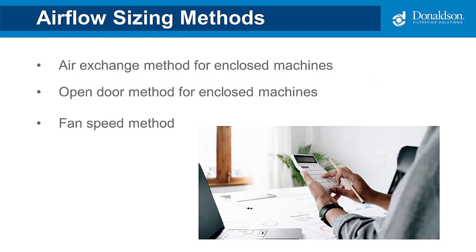A lot of times you'll be buying a new milling machine or CNC and it already comes with a mist collector mounted to the system, and when you fire it up you realize the mist collector supplied is not adequate for your application. This is usually because the machine manufacturer may have undersized the application or selected the wrong technology. This is common with OEMs whose expertise is in selling that CNC or mill, not necessarily the mist collection system — even though it's a vital component. So there are several methods we use for sizing mist collection systems, and we're going to talk about three: the air exchange method for enclosed machines, the open door method, and the fan speed method.